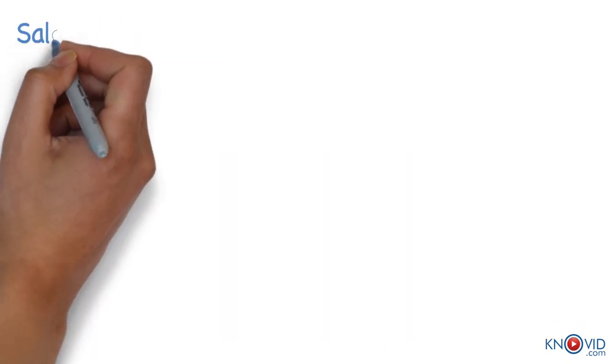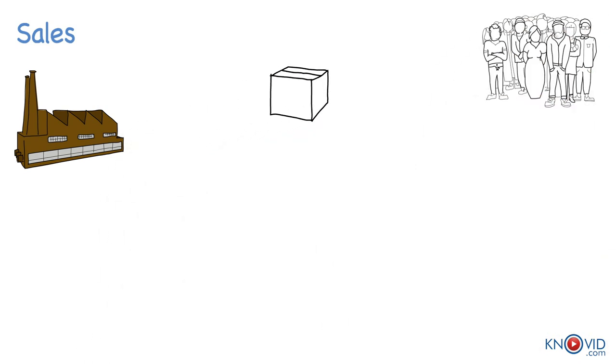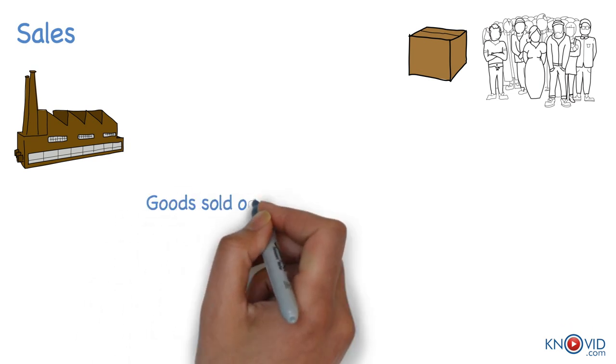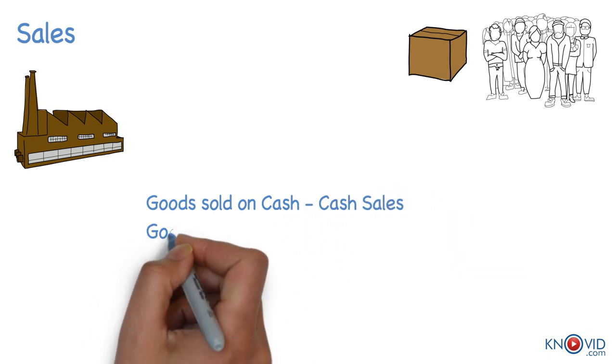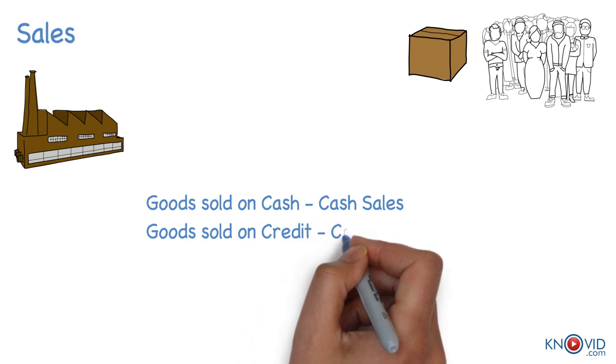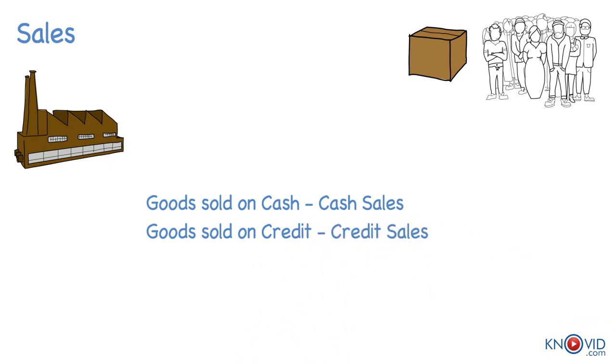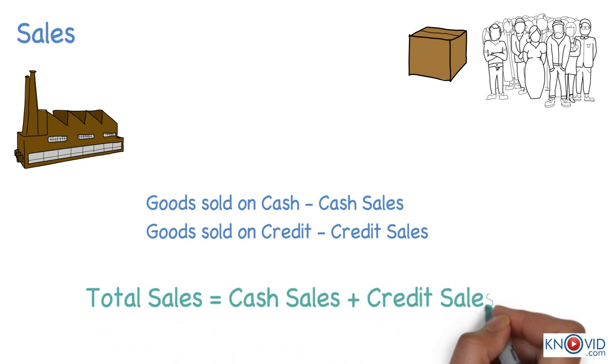Sales refer to the amount of goods sold that are already bought or manufactured by the business. When goods are sold for cash, they are cash sales. But if the goods are sold and the payment is not received at the time of sale, it is called credit sales. Total sales includes both cash and credit sales.